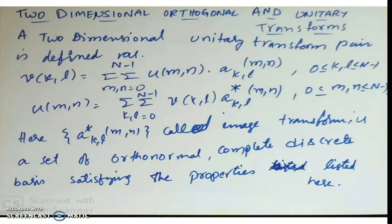A 2D unitary transform pair is defined as: v(k,l) = Σ(m,n=0 to N-1) u(m,n)·a_{k,l}(m,n), where k and l run from 0 to N-1. The inverse is: u(m,n) = Σ(k,l=0 to N-1) v(k,l)·a*_{k,l}(m,n), where m and n run from 0 to N-1. The set a*_{k,l}(m,n) for all m,n is called the image transform kernel — a set of orthonormal, complete, discrete basis functions if they satisfy two properties.